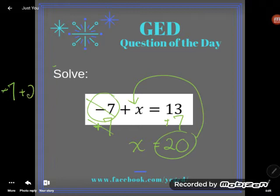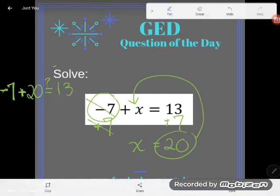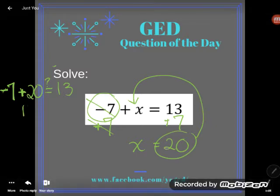Negative 7 plus 20. Is that really equal to 13? Well, if I'm in debt $7 and then I get $20, I'll be able to pay off my debt. 19, 18, 17, 16, 15, 14, 13. And I'll have $13 left. 13 is equal to 13. Check. That worked out for me.